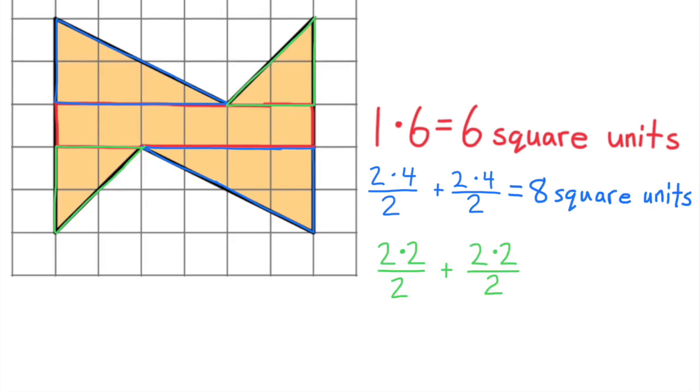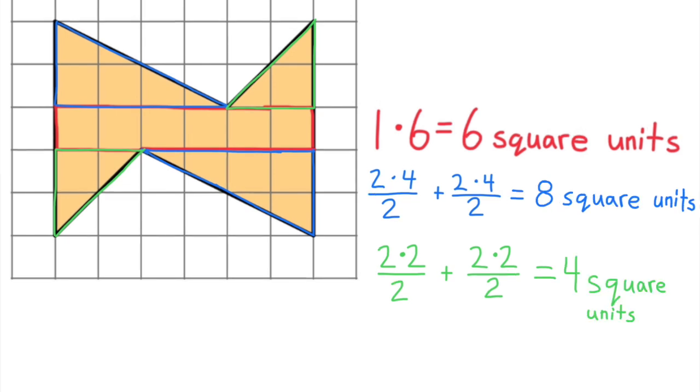Highlighted in green, you can see two triangles that have a base of 2 and a height of 2. Together, these two smaller triangles have an area of 4 square units.